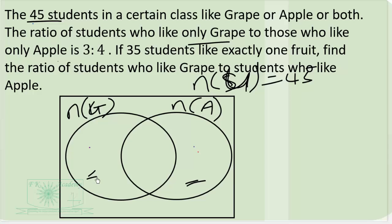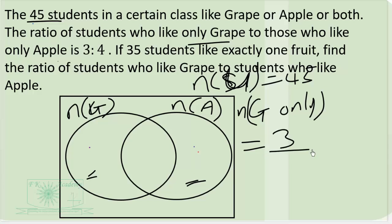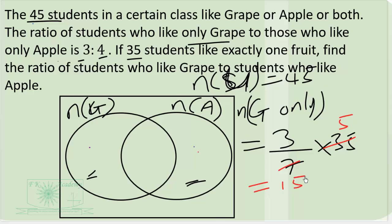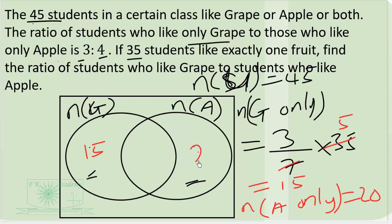To find those who like grapes only: the number who like grapes only equals the ratio corresponding to grape only, which is 3, over the total ratio 3 plus 4 equals 7, multiplied by 35. That gives us 15. So those who like grapes only are 15. And those who like apple only will be 35 minus 15, which gives us 20.